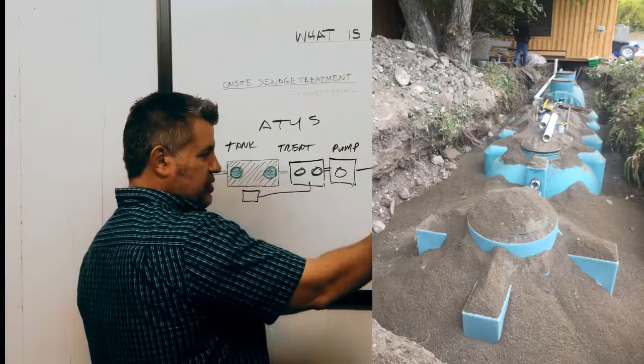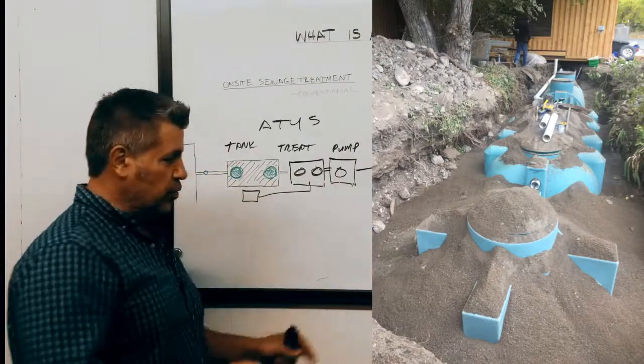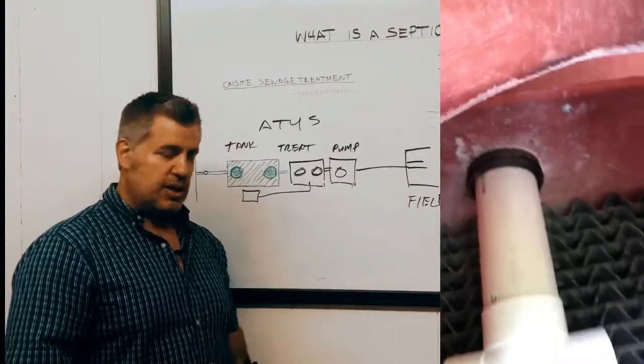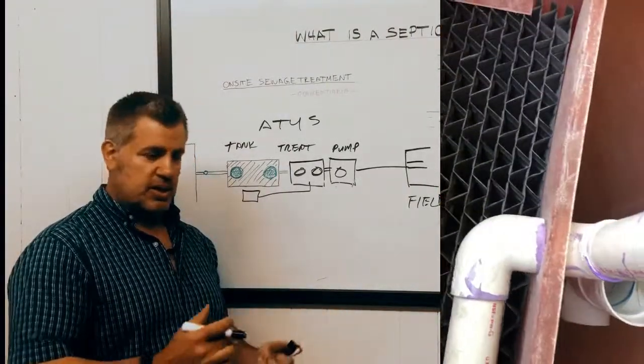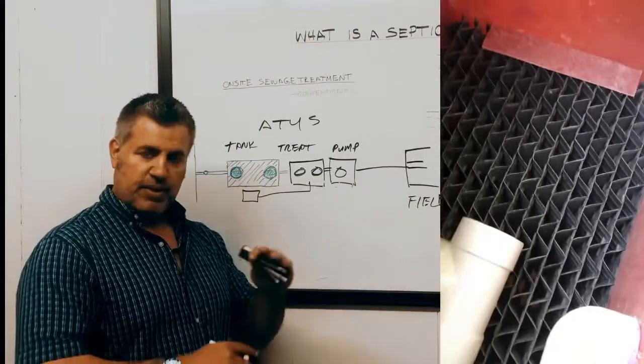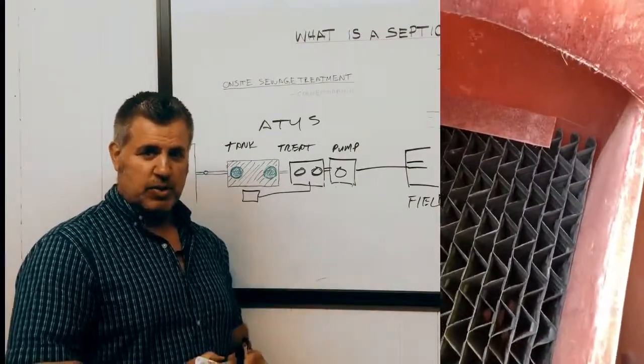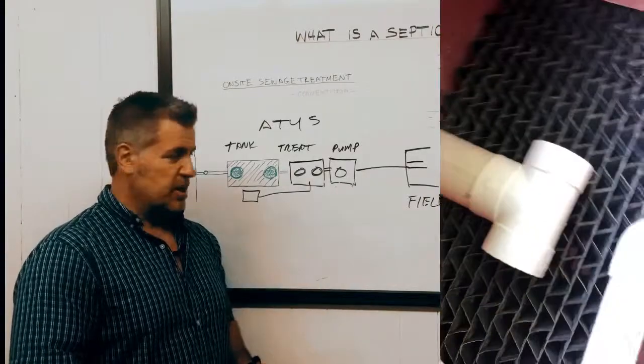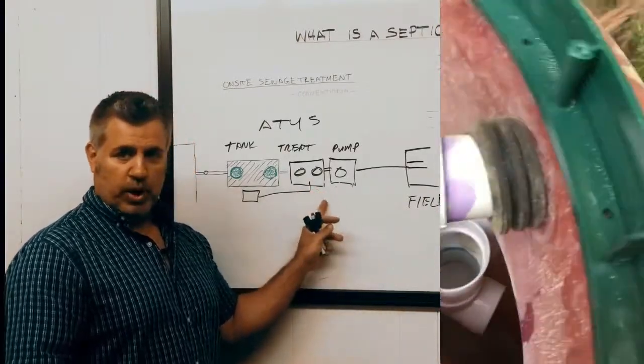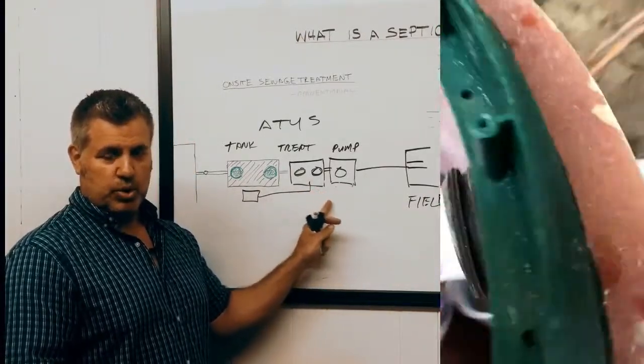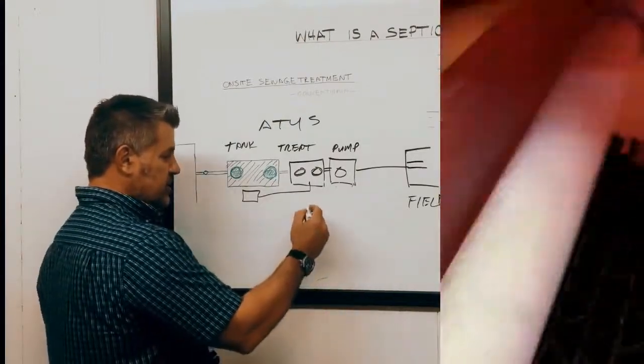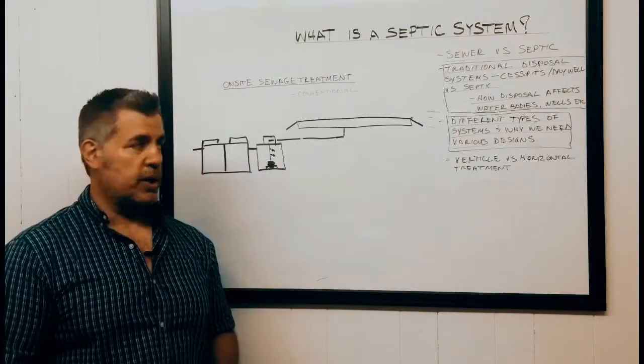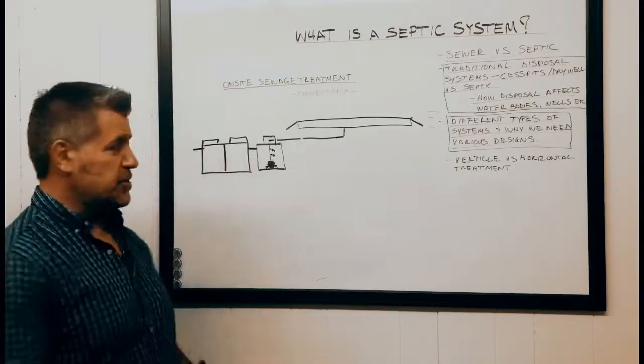That aerated effluent makes its way into the pump chamber which then delivers everything into the field in continuity all at the same time. This allows us further reductions in our setbacks, further reductions if we have limited soil horizons or limited space in the good soil from restrictive type soils. Then we can be required to ensure that it's a type 2 system.